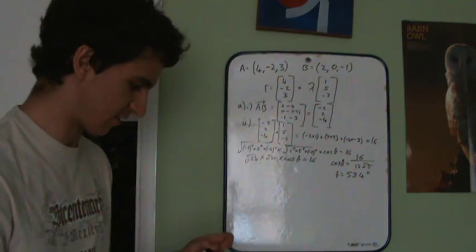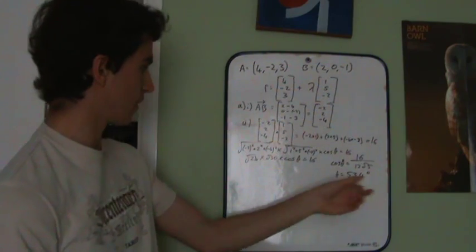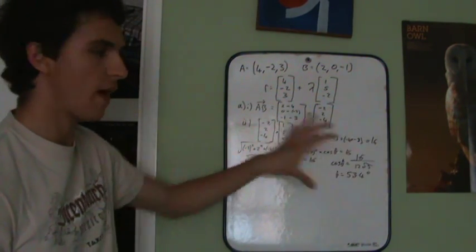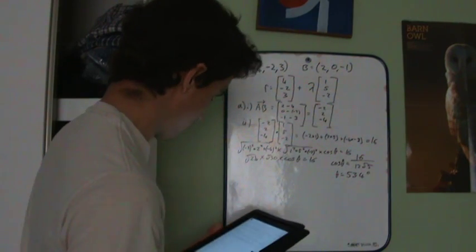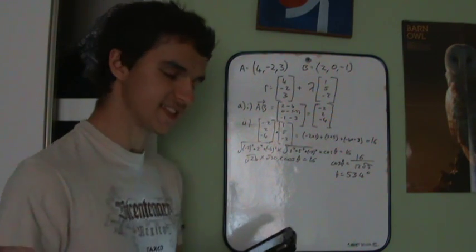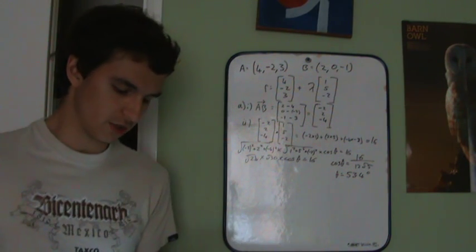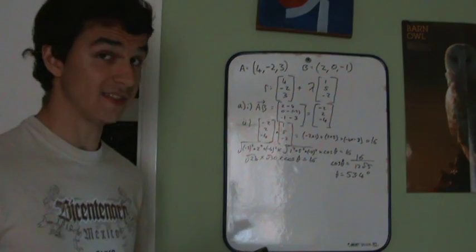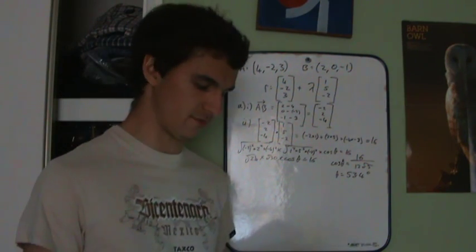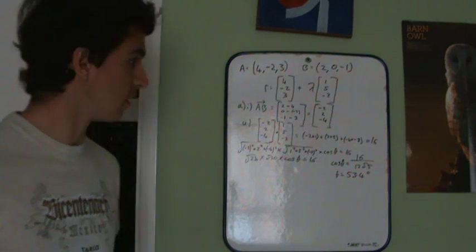This is where we get difficult. The next question is worth six marks. Part B: the point C lies on the line L such that angle ABC is a right angle. Given that ABCD is a rectangle, find the coordinates of the point D. The first thing I thought when I read this question was: where does D come from? We've just been talking about C for the whole question. We're probably not going to have enough room here, so I'm going to turn the board over.